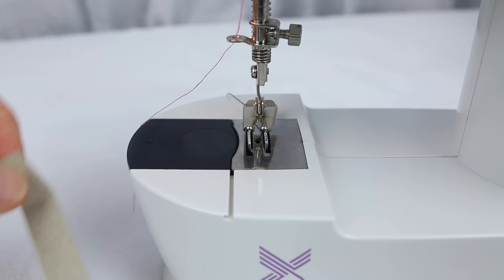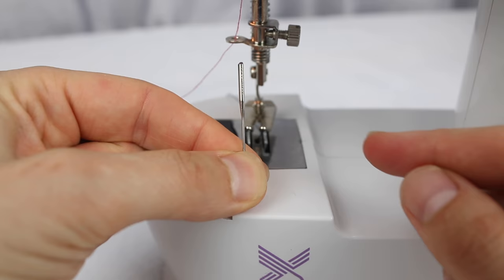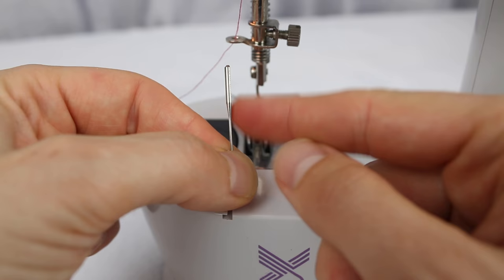And then with your replacement needle, you need to make sure that the flat side of the top of the needle, I don't know if you can see this, but there's a flat edge and there's a rounded edge. Make sure the flat edge is pointing to the right of your machine.